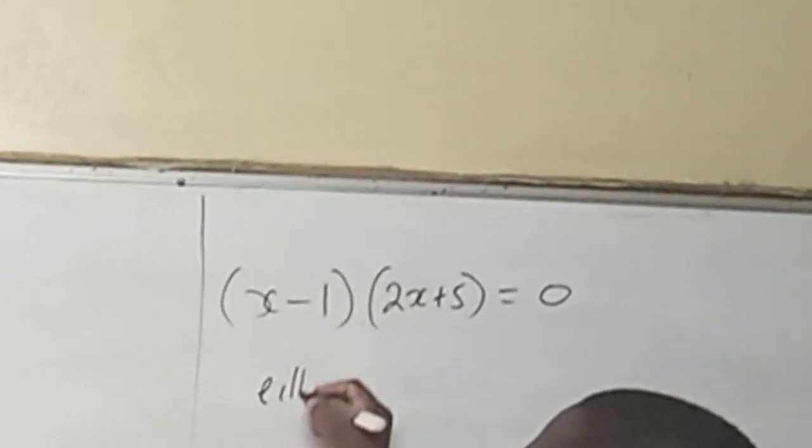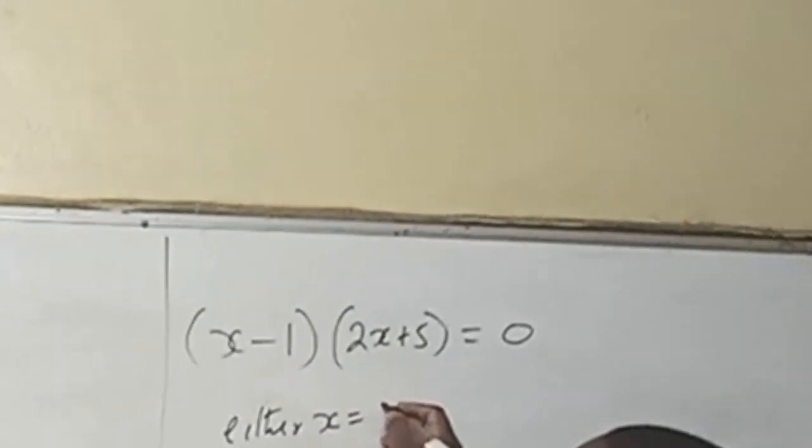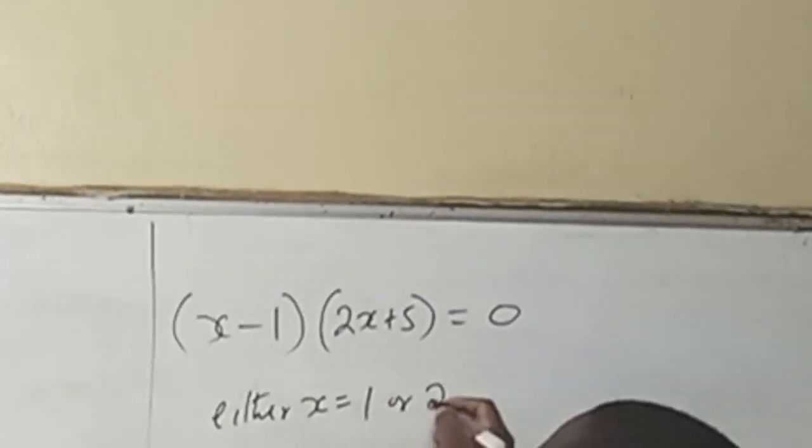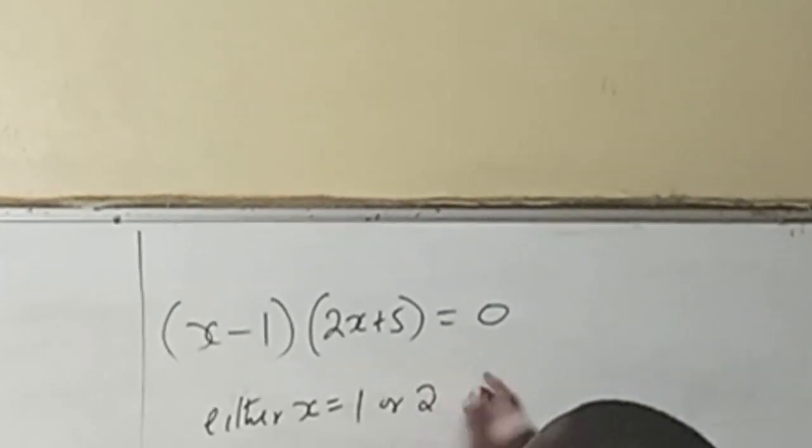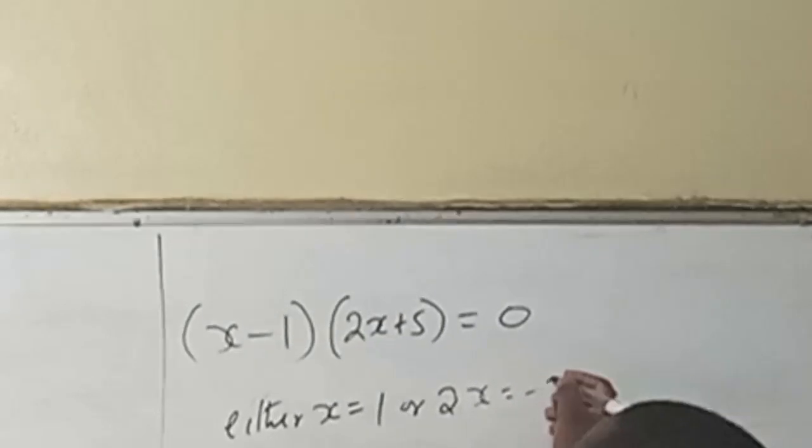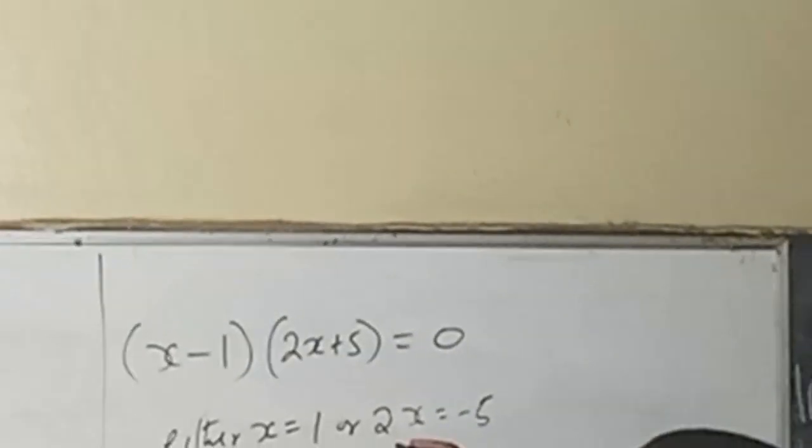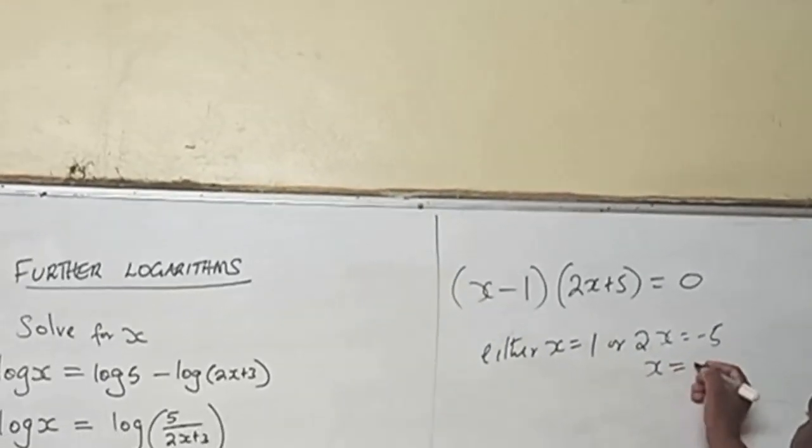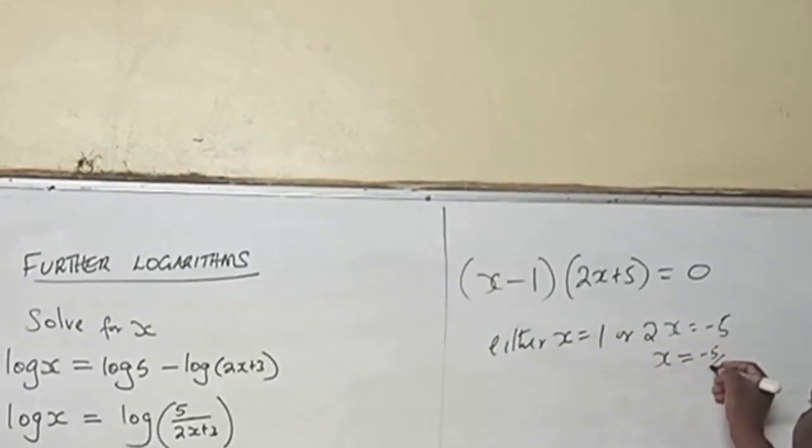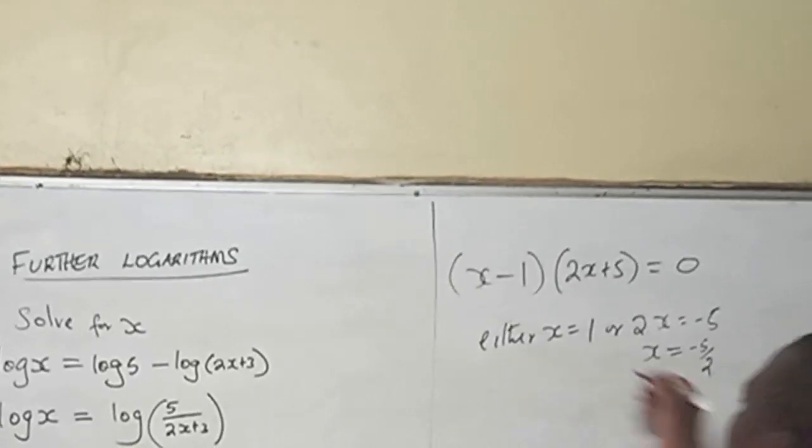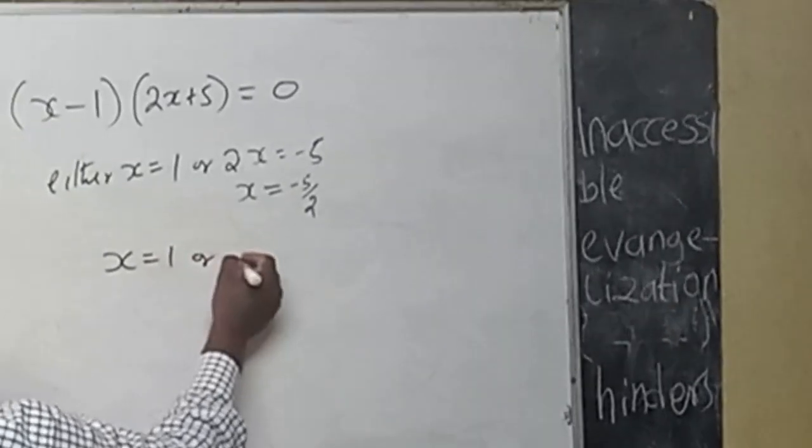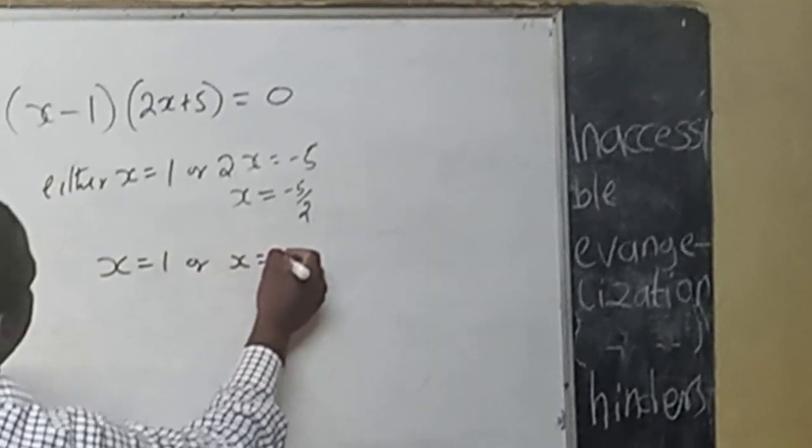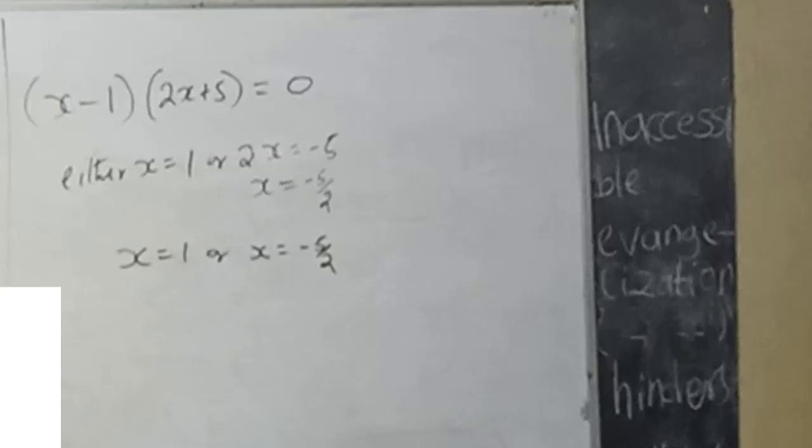And this implies that either x is equal to 1 or 2x equals negative 5, so x here will be negative 5 over 2. So our roots are x equals 1 or x equals negative 5 over 2.